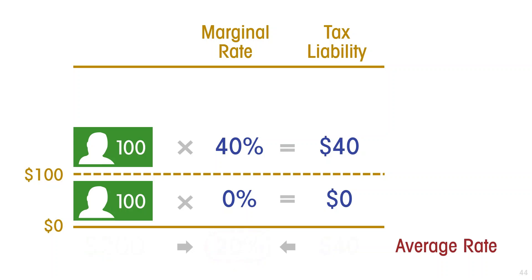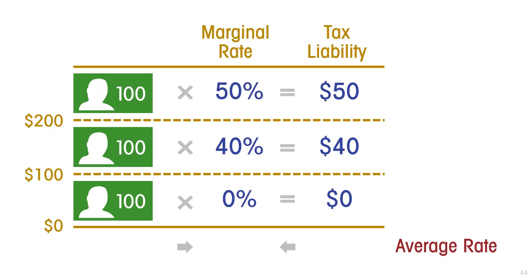To emphasize the point, suppose there's another tier. Suppose above $200 a year the marginal tax rate is 50%. Then an individual who earns $300 a year will pay 50% of that last $100, which is $50.